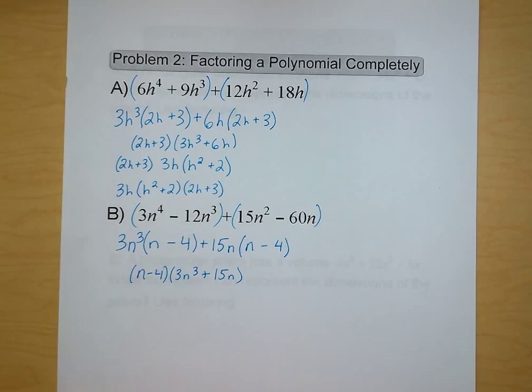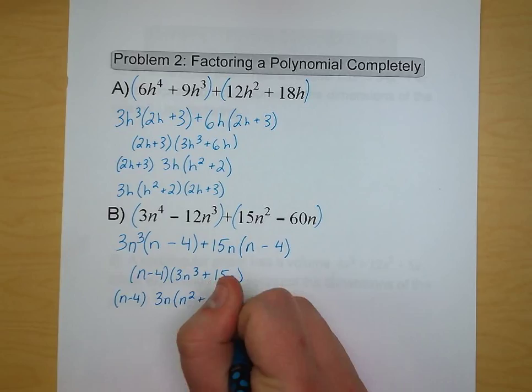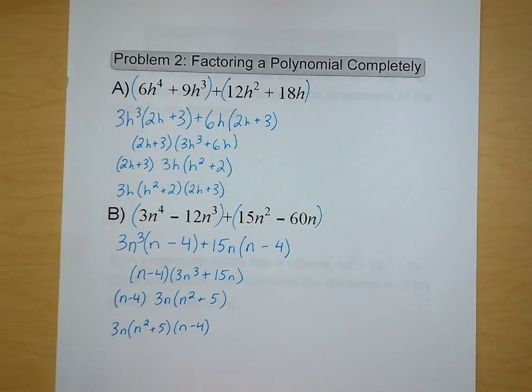Is that our most simple form? I don't think so. We can pull out a 3n from both of those terms, and we're left with n squared plus 5. We rewrite it in our standard form with 3n out front: n squared plus 5 and n minus 4. It doesn't matter which order you put those two terms in — they're both fine. Again, we cannot simplify n squared plus 5 any further. There are no factors that are going to multiply to give us 5 and add up to give us 0.